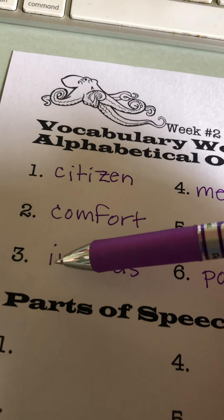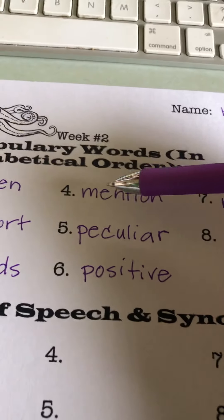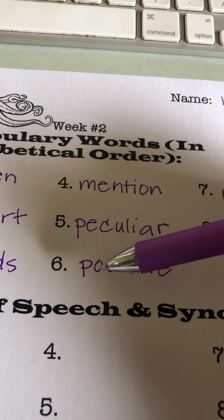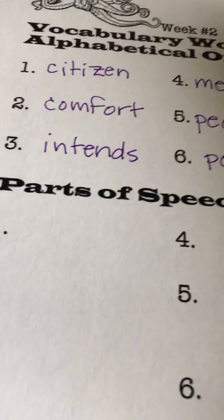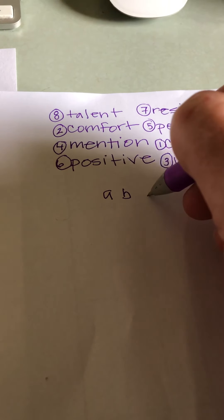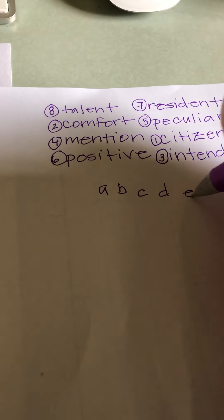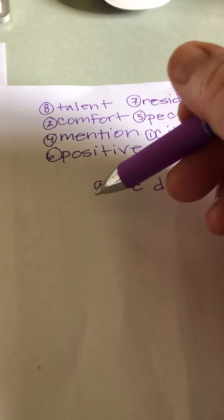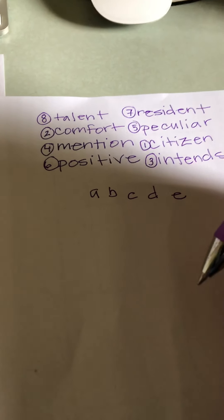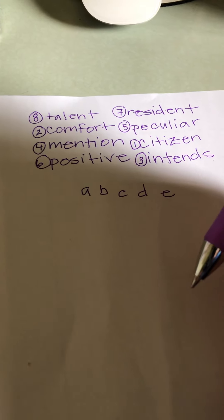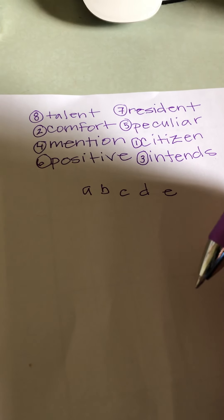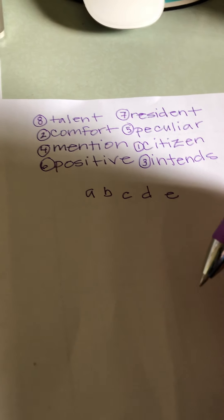Just to double check: CI comes before CO, next is the letter I in the alphabet, then M, then PE comes before PO, then RE and then TA. Remember, if you don't know alphabetical order you can write the letters of the alphabet down — A B C D E — or you can sing it. I gotta be honest with you, sometimes even though I'm an older lady I still sing the ABC song to remember what order they go in.